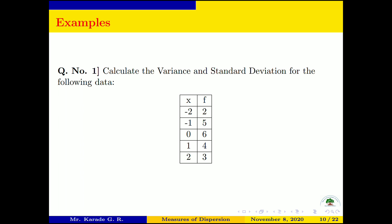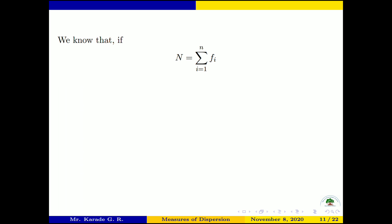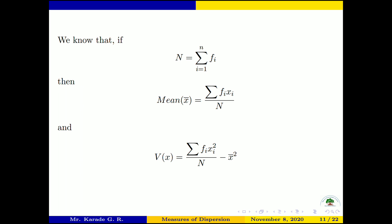For this data we calculate variance and standard deviation. We use: N = summation F, X̄ = summation FX divided by N, and Variance(X) = summation FX² divided by N minus X̄². We denote Xᵢ by X and Fᵢ by F for simplicity.